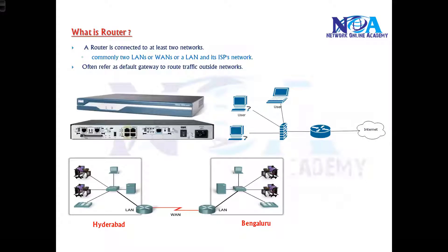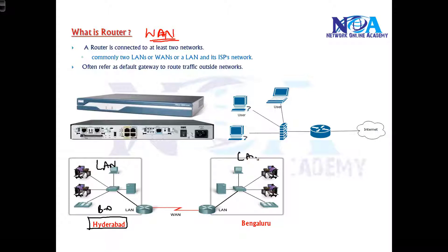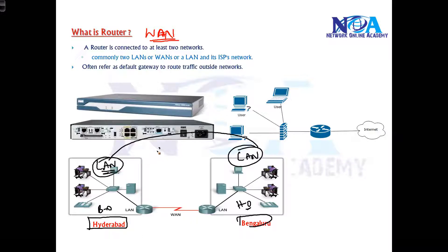The next device we have is something like a router. A router is a device which connects two or more networks. If you remember, we discussed in the previous section about WAN, where you have one LAN in a Hyderabad branch office and another LAN in Bangalore — let's say this is my head office. Now you want to make sure that these two LANs connect to each other and exchange information, which means you want a WAN connection between these two.